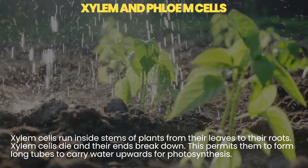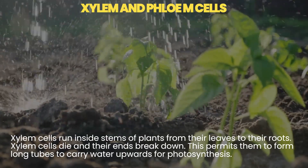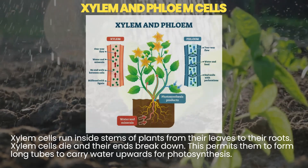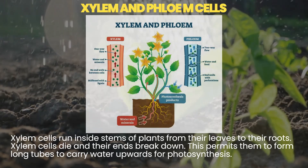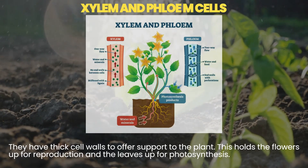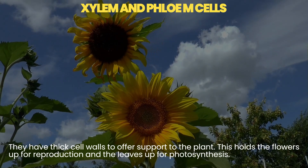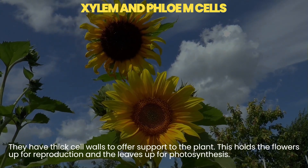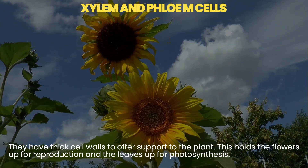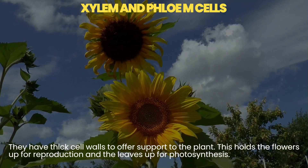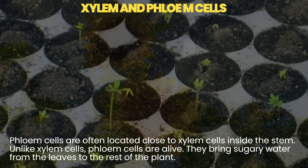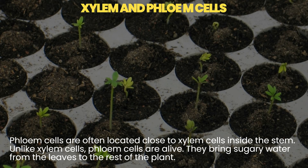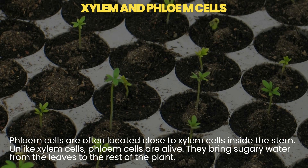Xylem cells run inside the stems of plants from their leaves to their roots. Xylem cells die and their ends break down, which permits them to form long tubes to carry water upwards for photosynthesis. They have thick cell walls to offer support to the plant, holding the flowers up for reproduction and the leaves up for photosynthesis.